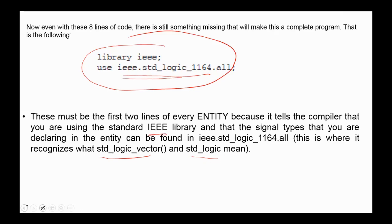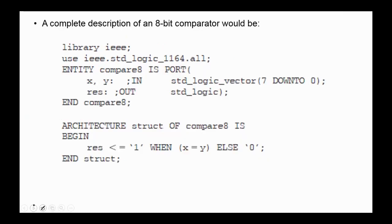Now we can combine all these three parts to get the complete description of an 8-bit compare circuit. This is the library lines, this is the ENTITY section, and this is the ARCHITECTURE section. Again, here is the main statement of this section. Result retains one if X and Y are equal and zero otherwise.